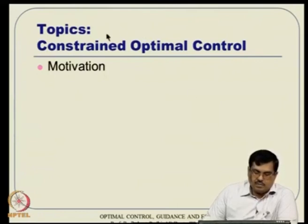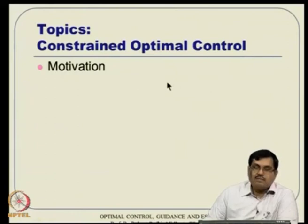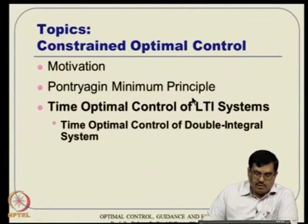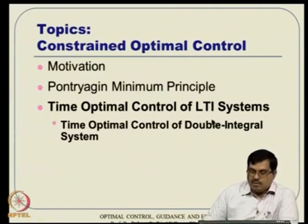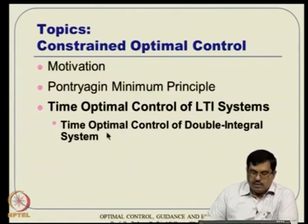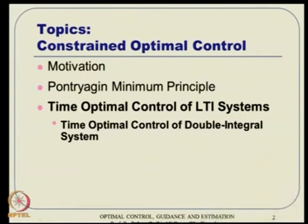The topics on Constrained Optimal Control we are covering include: motivation, which we gave in the last class; Pontryagin's Principle, which we derived in the last class; and in this lecture, I will talk in detail about time optimal control of linear time invariant systems. Towards the end of the lecture, we will take time optimal control of the double integral system, a very standard benchmark problem.